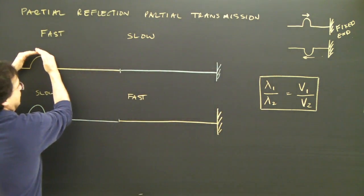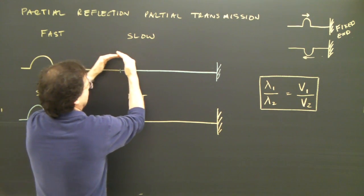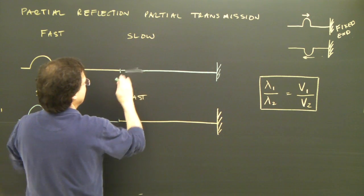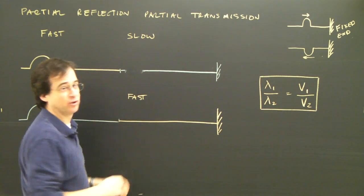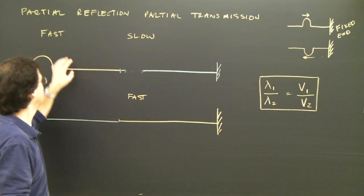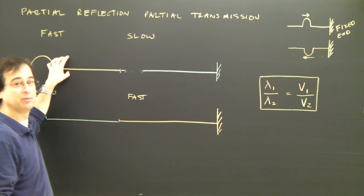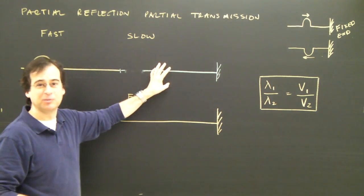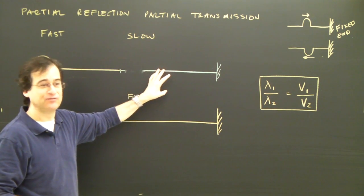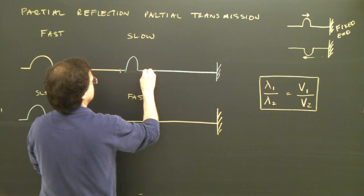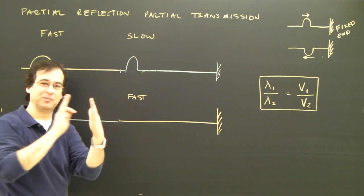So this wave comes in like this very quickly, hits the slow portion and gets shorter. So I can draw what happens to the wave. It's going to get shorter. How much shorter? It depends on the change in speed. If it's traveling one meter per second here and half a meter per second there, it's traveling half as fast, it's going to be half as long.